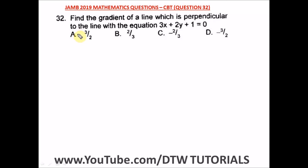Question 32 of the JAM 2019 mathematics past question — that's a UTME CBT exam. It says: find the gradient of a line which is perpendicular to the line with the given equation. So we need to find the gradient of the line which is perpendicular.